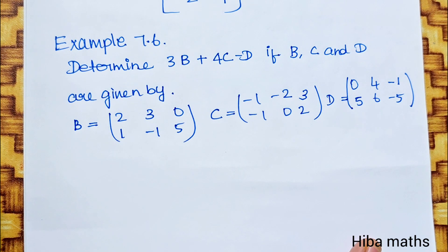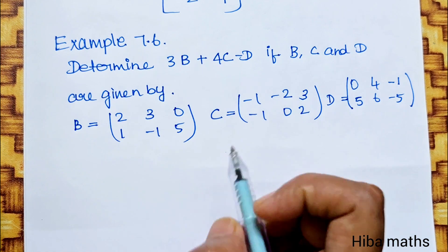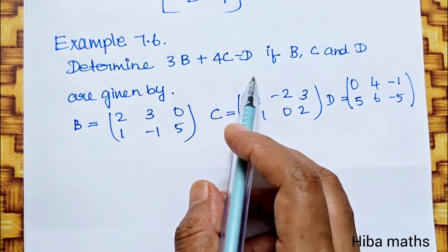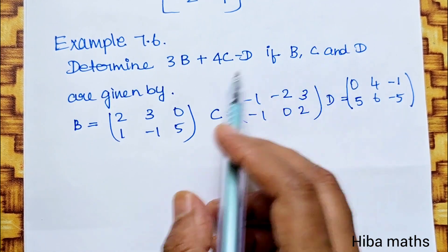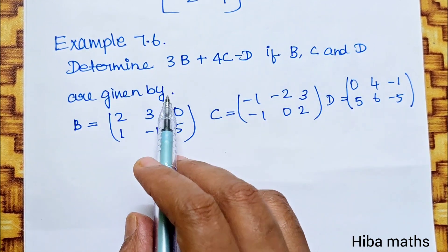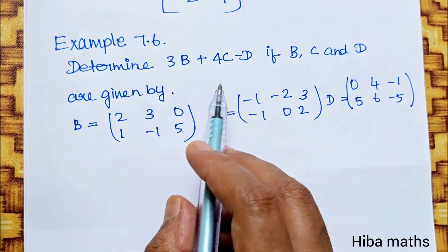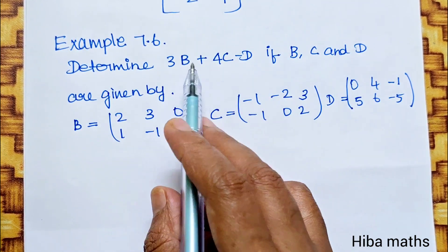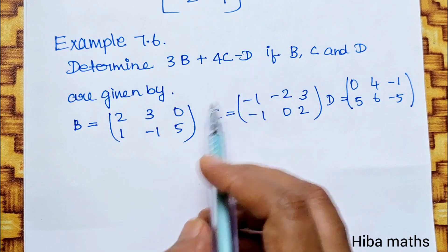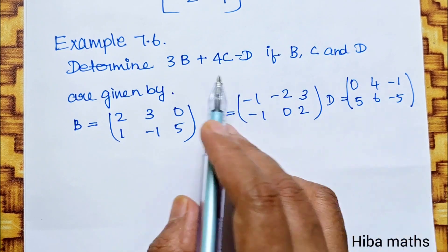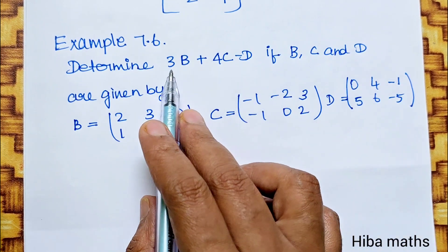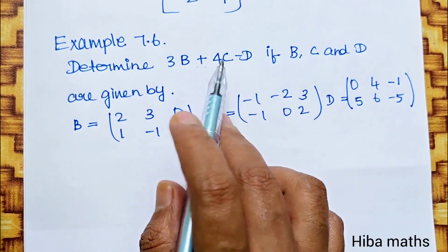Example 7.6: Determine 3B plus 4C minus D, where B, C, D are given matrices. B value, C value, D value — but that is the multiplication.